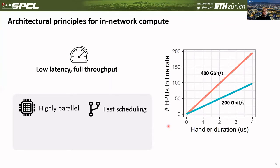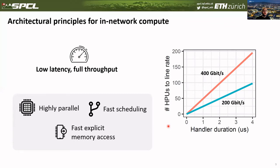The second requirement is fast scheduling, because this directly impacts low latency. And finally, fast explicit memory access, because we want a high number of instructions per cycle in order to efficiently use the cycle budget we have.